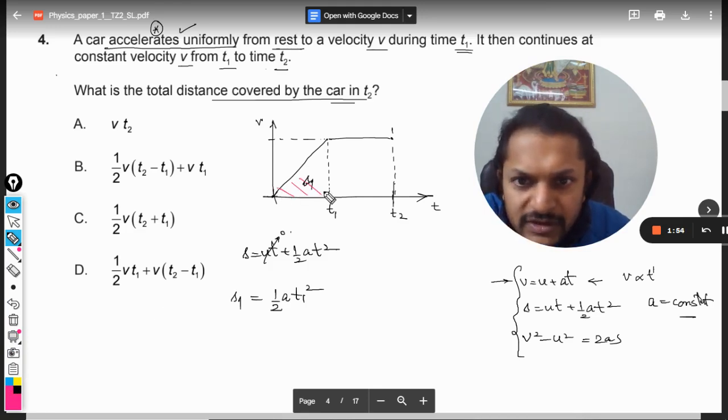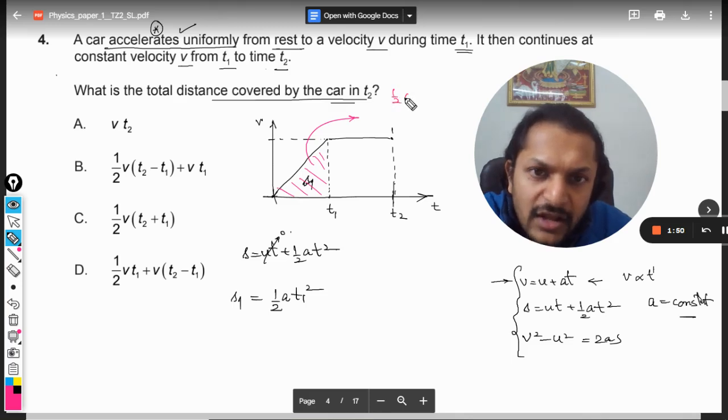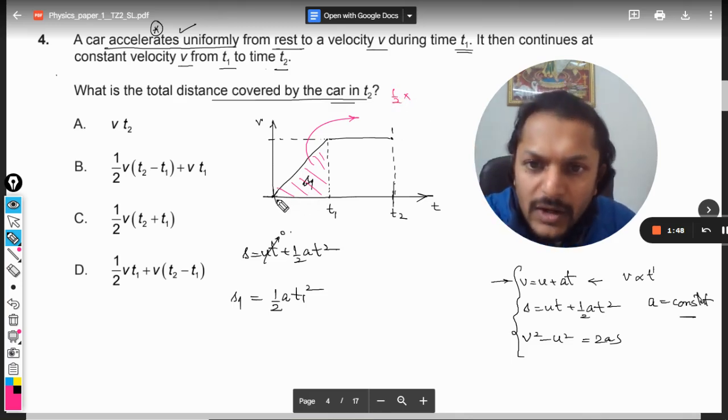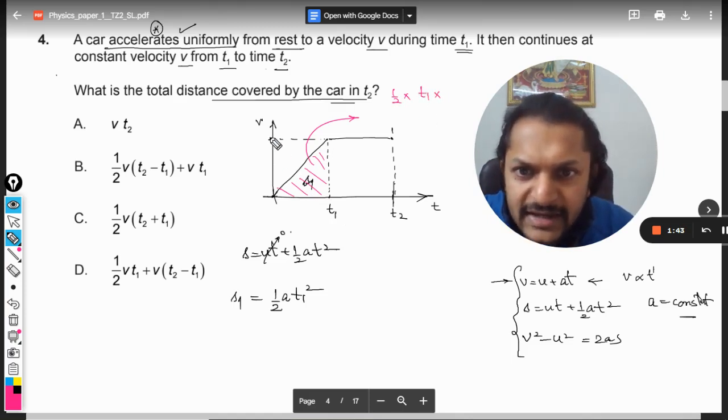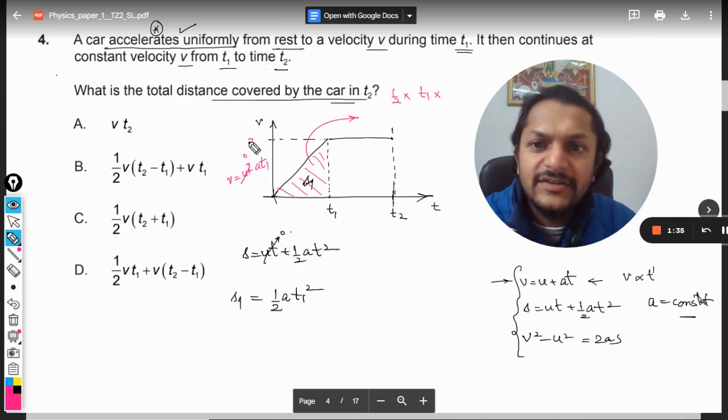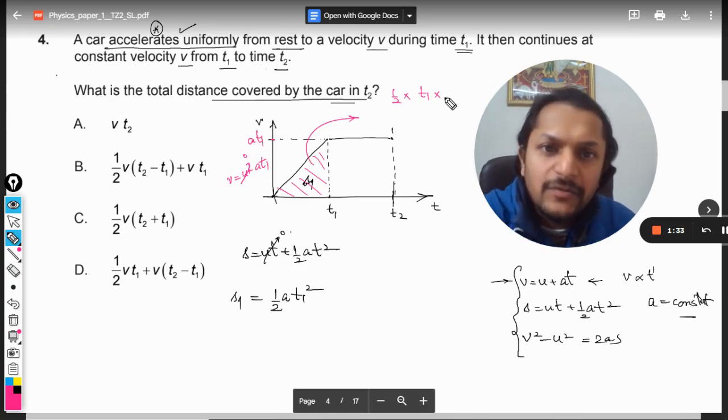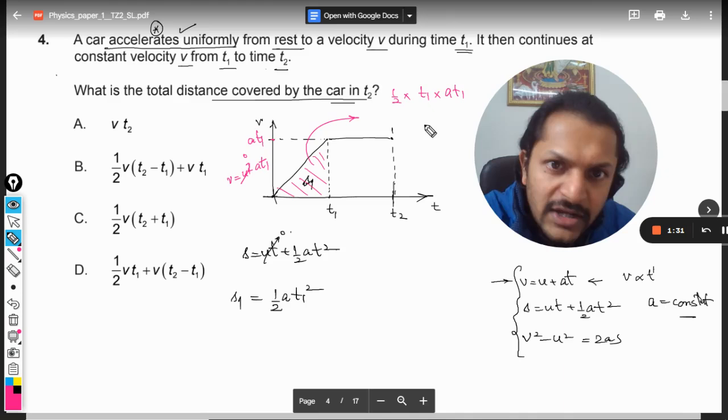So this is the distance traveled here, that is from 0 to t1. And if I want to find the area, I will show you how to do it with the help of area also. So what is the area here? It's a triangle: half into base into height. What is the base? Base is t1. And what is the height? The height is this velocity. So V is equal to U plus AT, and U will become 0, so it is At1. So the height is At1. So I will write At1. So clearly it is coming out to be half A t1 squared.